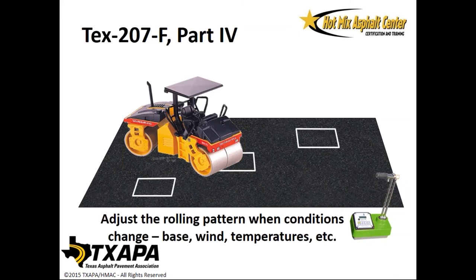Adjust the rolling pattern when conditions change — base temperature, wind temperature, and environment. If it suddenly becomes cloudy, density can fall off. Most of the time you just need to pay attention to the environment: whether it became cloudy, the wind picked up, or there's a new material. Roller operators have to be able to see these changes and make adjustments. QC personnel running along checking densities need to work together with the roller operators.